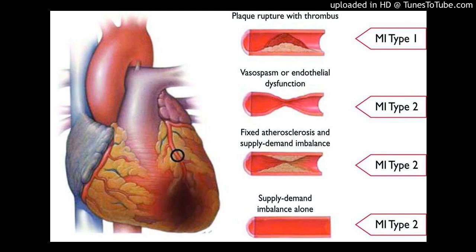Materials and Methods: A case-control study was carried out including 144 participants, divided into two main groups: 72 normal healthy individuals and 72 with AMI. CPK levels were assayed in serum and unstimulated whole saliva of AMI patients and controls using the International Federation of Clinical Chemistry (IFCC) method. Statistical analysis was performed using unpaired T-test and Pearson correlation coefficient test.